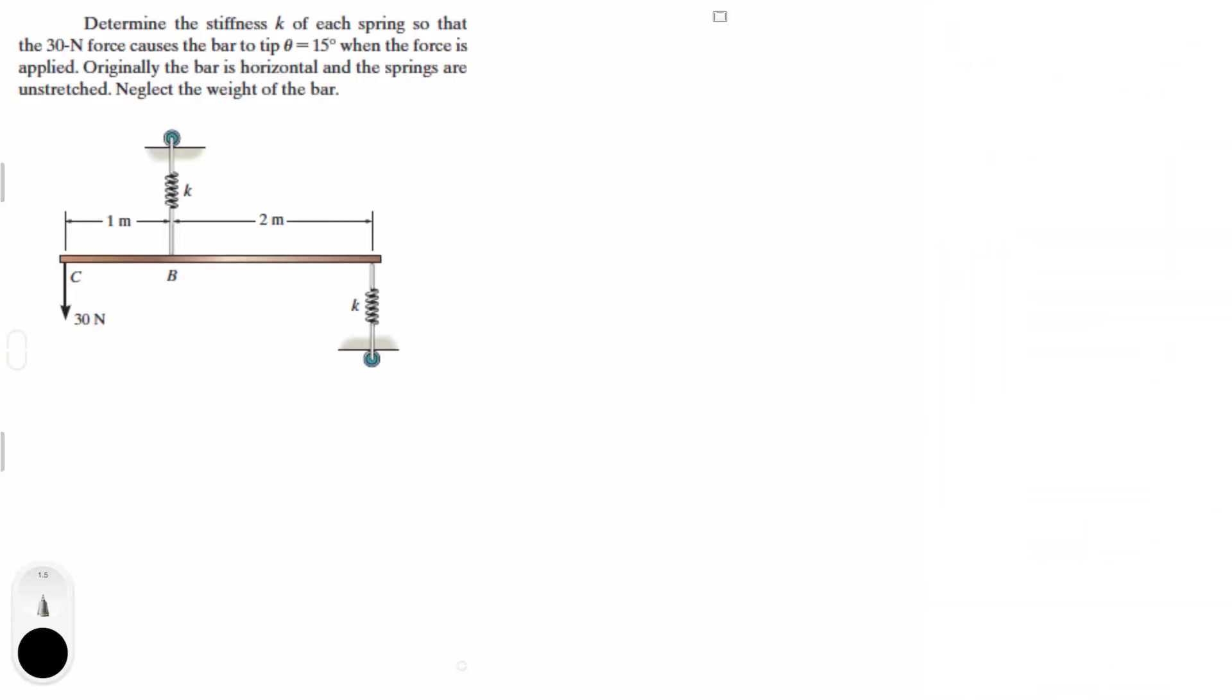This problem says, determine the stiffness k of each spring so that the 30 Newton force causes the bar to tip 15 degrees when the force is applied. Originally the bar is horizontal and the springs are unstretched. Neglect the weight of the bar.